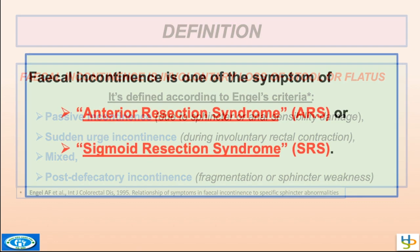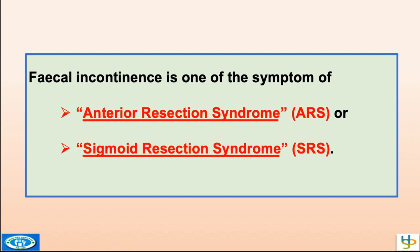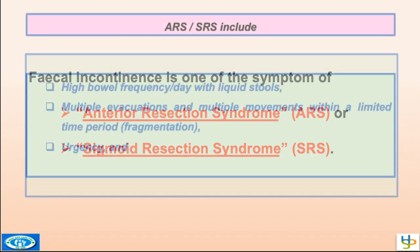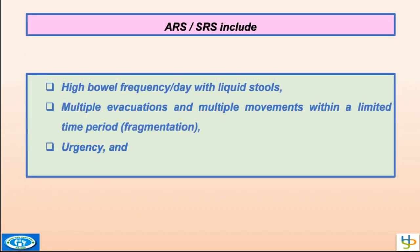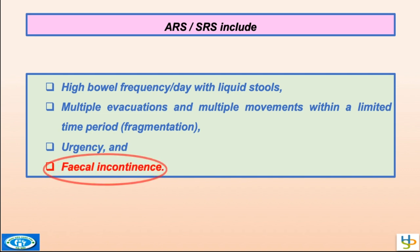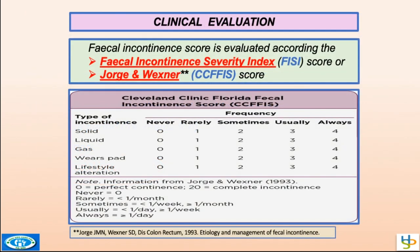Fecal incontinence is one of the symptoms of anterior resection syndrome or sigmoid resection syndrome. These syndromes include high bowel frequency per day with liquid or solid stools, multiple evacuations with a limited time period — what we call fragmentation — and urgency and fecal incontinence. This is a factor that will destroy the quality of life.